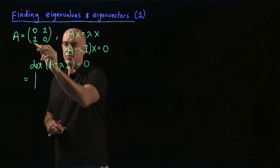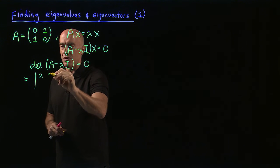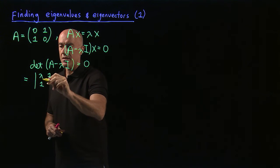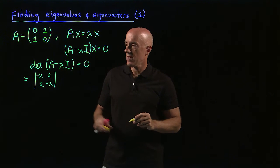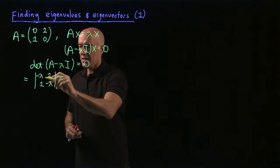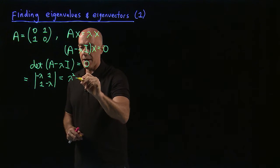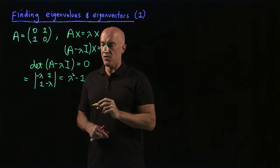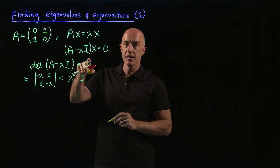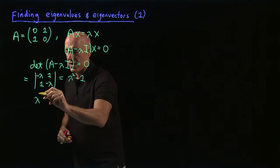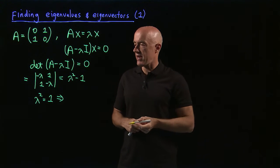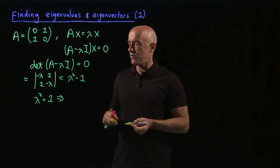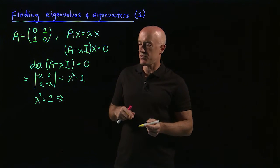We subtract λ from the diagonal, so we get the matrix with entries -λ, 1, 1, -λ. The determinant of this matrix is λ² minus 1, and this is supposed to be zero. So we have λ² minus 1 equals zero, which means λ² equals 1. That's a very simple quadratic equation with roots λ equals minus 1 and λ equals plus 1.